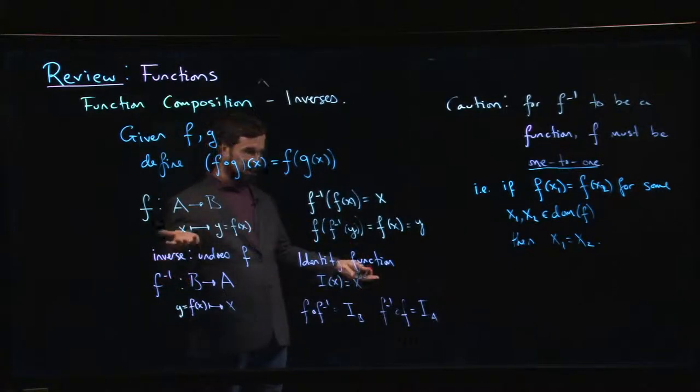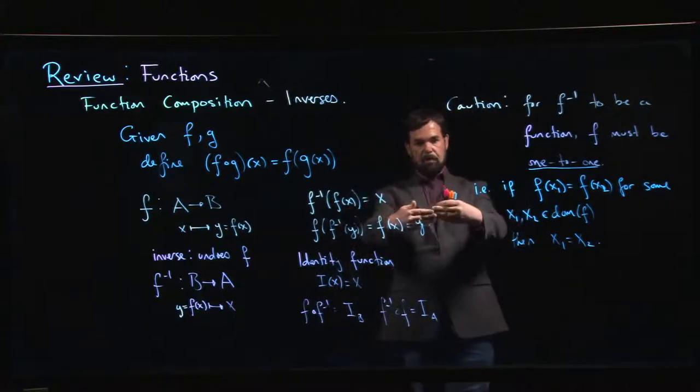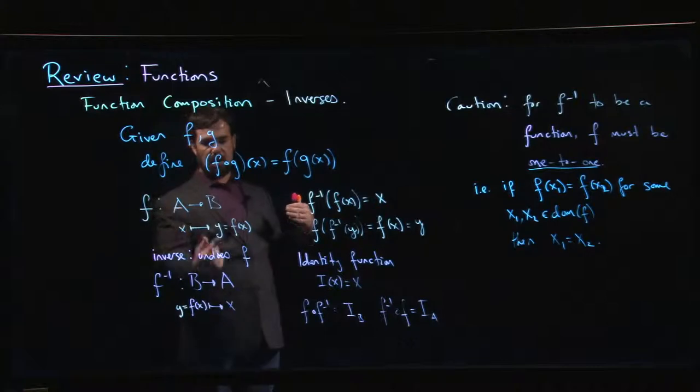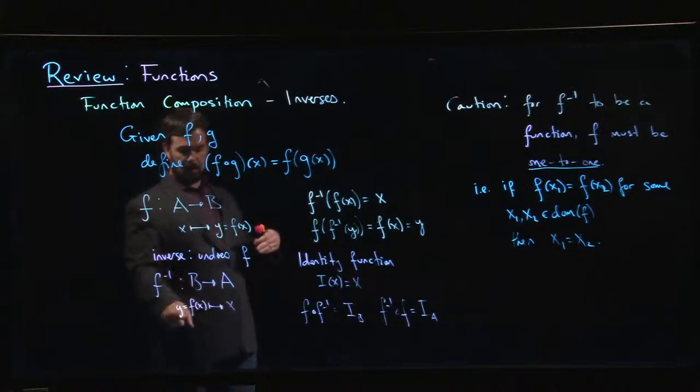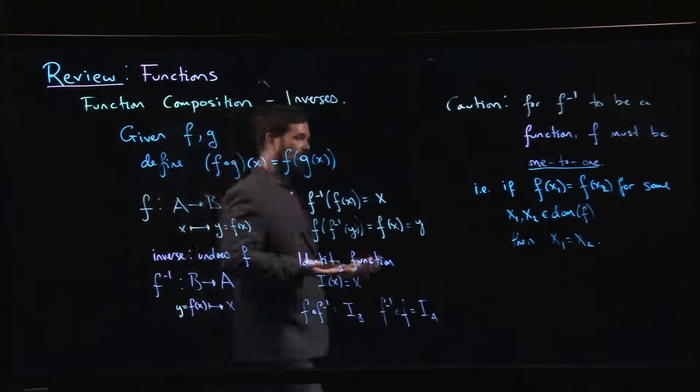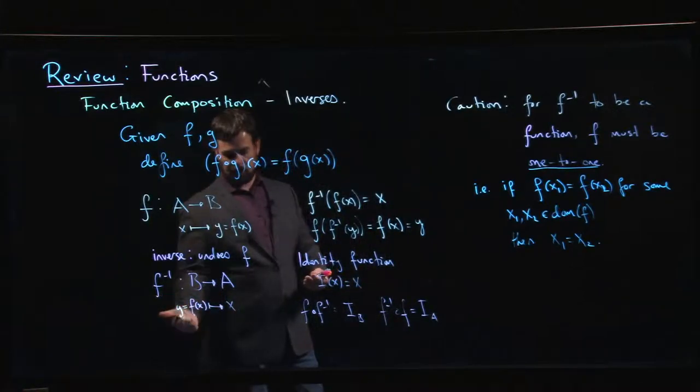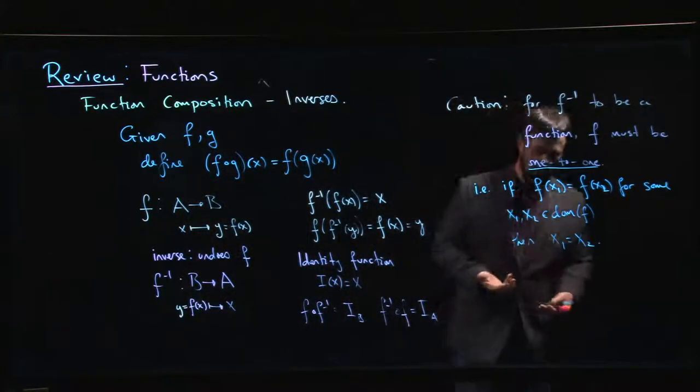For a regular function, that's allowed. Functions are allowed to have this happen. You can have more than one input give you the same output. But if you want to reverse things or if you want to undo, if there were two different elements of the domain that get sent to the same thing, and you're sitting there and you're staring at this y in b and you want to get back to x. Well, if this y came from two different x values, how are you going to choose which one it should be? You don't actually have a function. It's not a function if this input for the inverse could be associated to more than one output.